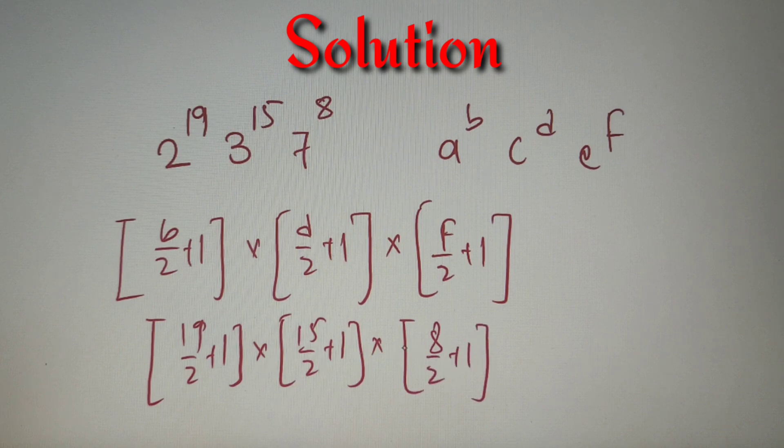Now we have to just calculate this value. Now 19 by 2 gives us 9.5 and plus 1 gives 10.5, and the greatest integer value of 10.5 is equal to 10. So our first value is equal to 10.